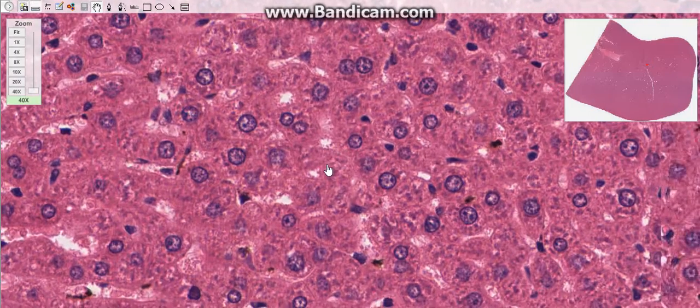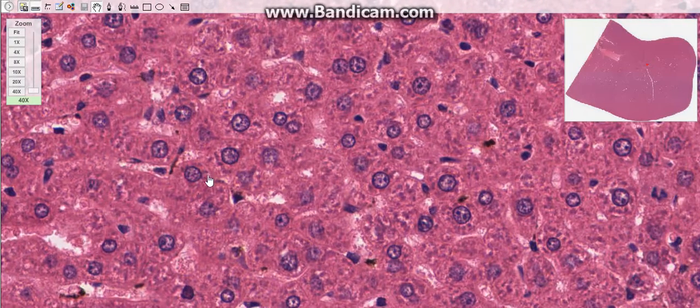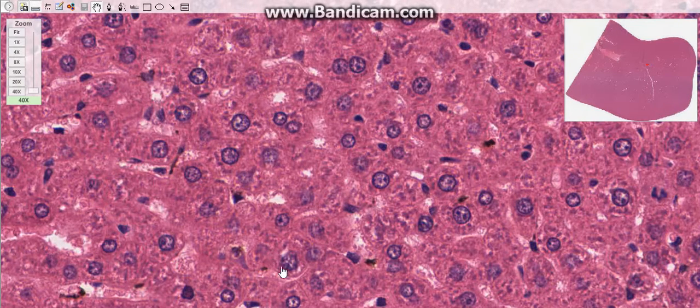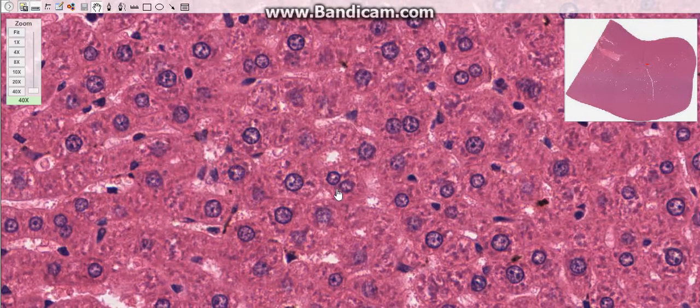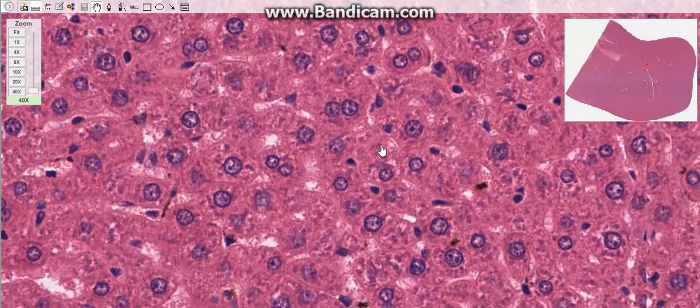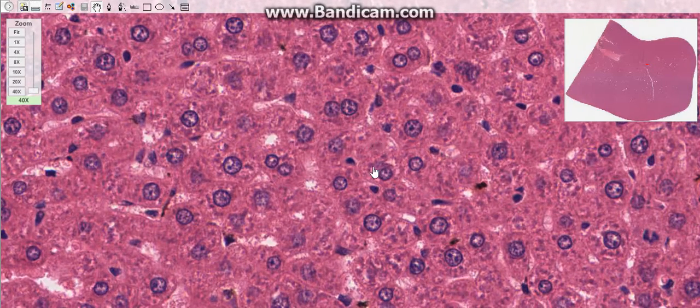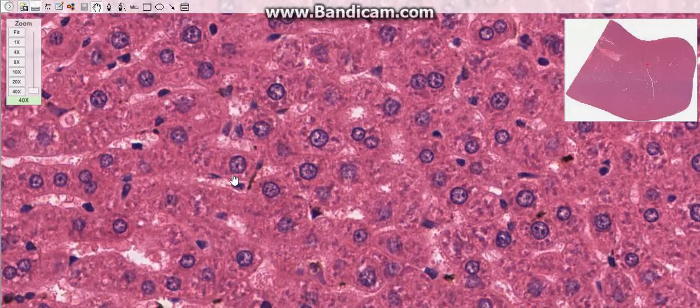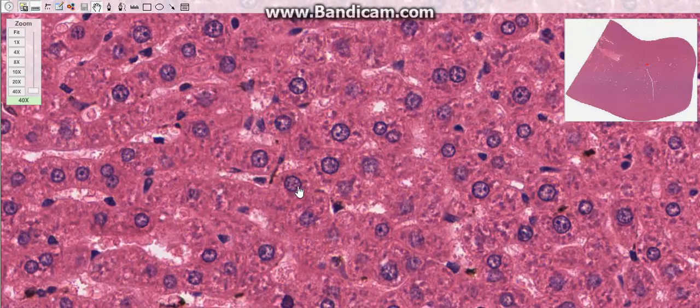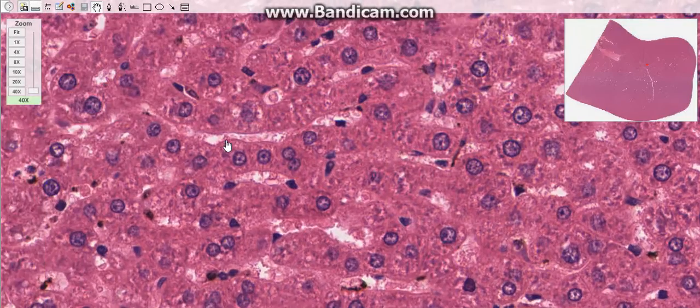Each liver cell has approximately 2000 mitochondria. Hepatocyte lysosomes are responsible for degradation of intracellular organelles and endocytosis of many macromolecules. There's also the peroxisomes as well. They're abundant in the hepatocytes because we know that the peroxisomes help in fat metabolism. And the functions of Golgi complex include the formation of lysosomes and secretion of plasma proteins.